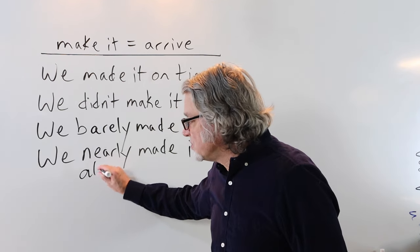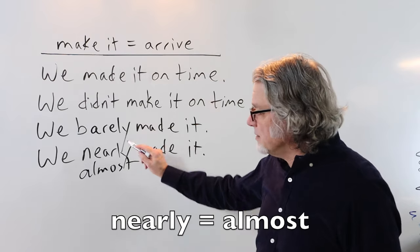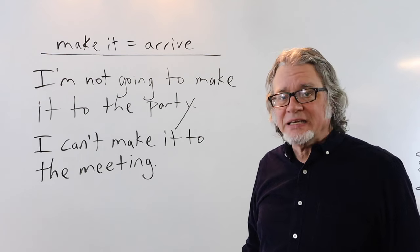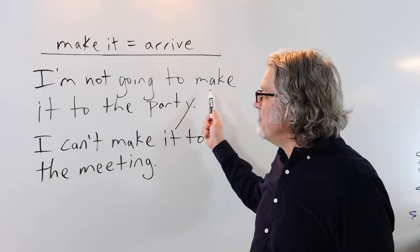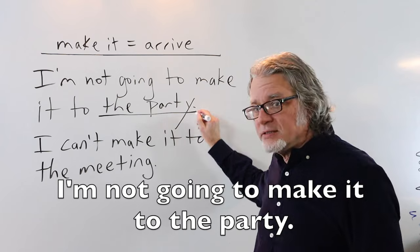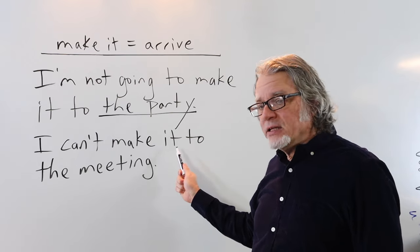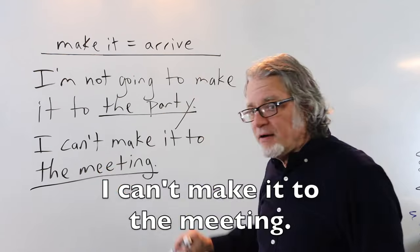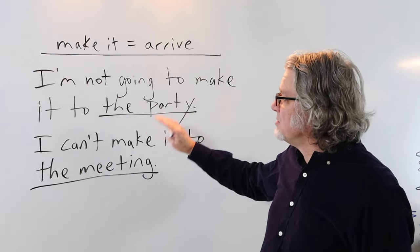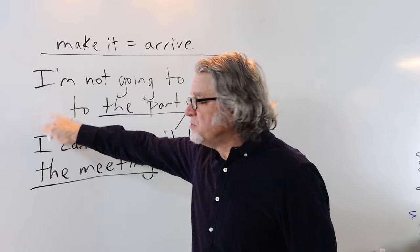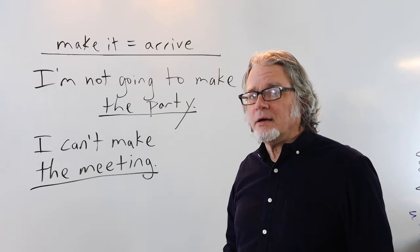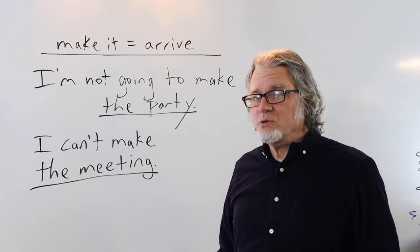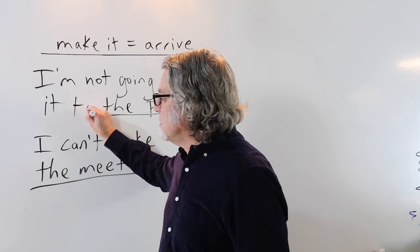We almost made it. These two adverbs are the same. When a person can't attend something then you'll hear something like this: I'm not going to make it to the party. I can't make it to the meeting. It is possible to take it off. If you do that then take to off as well. I'm not going to make the party. But if you use it then you need to.